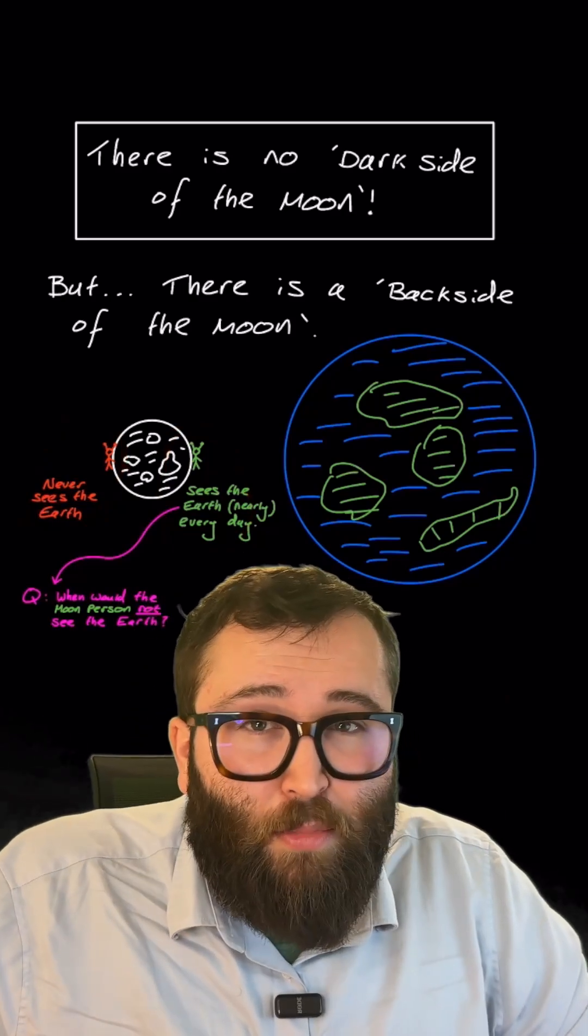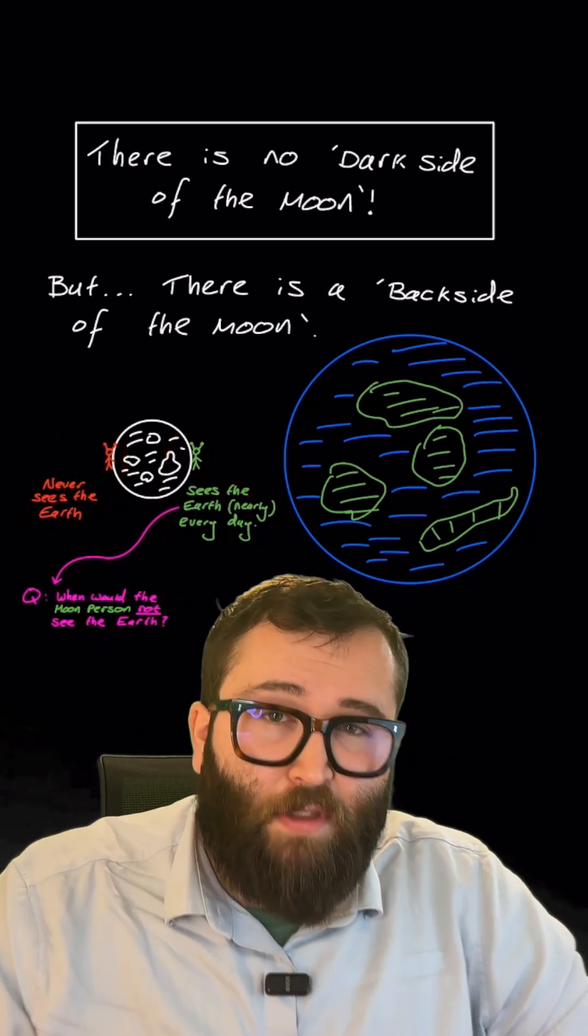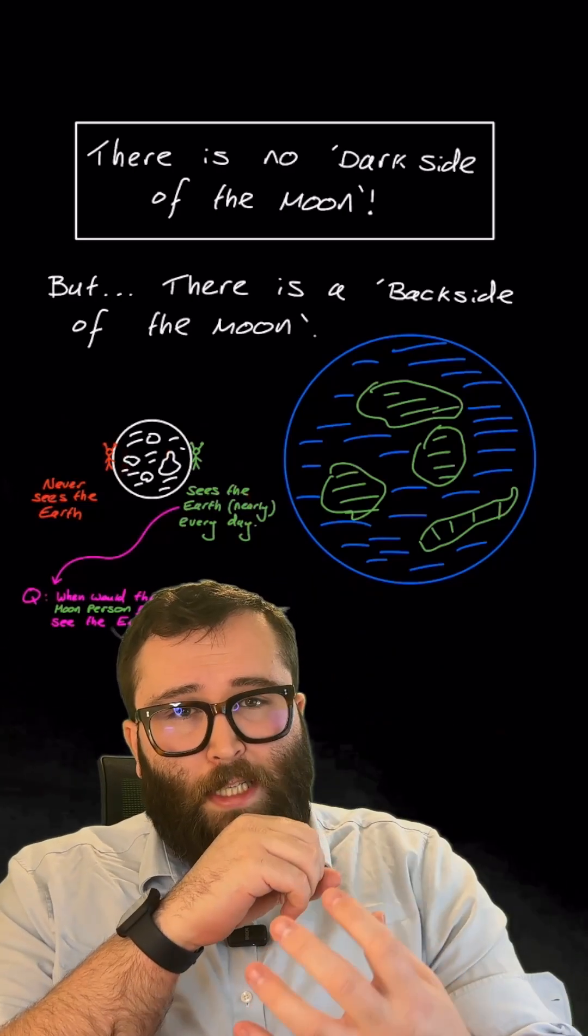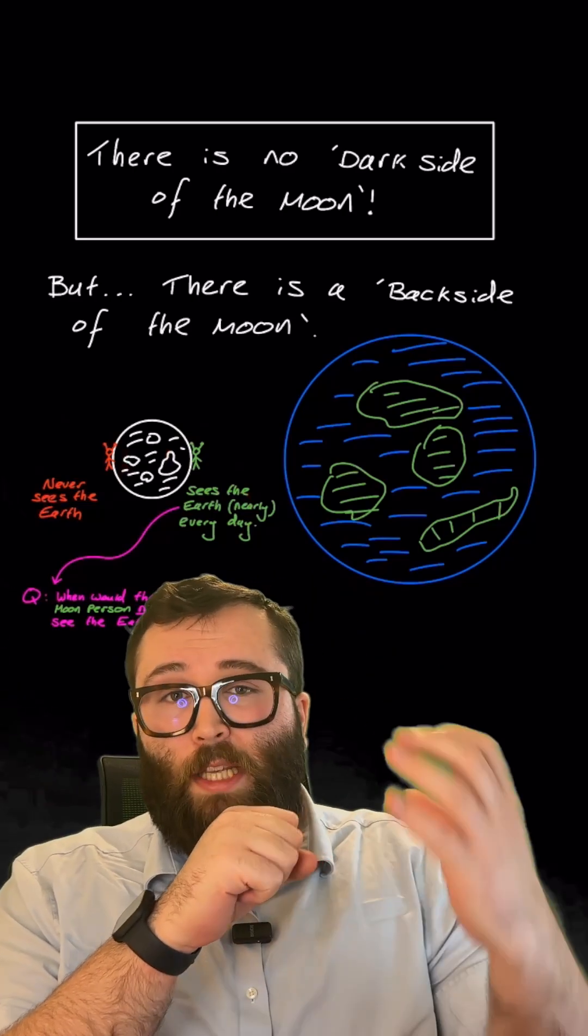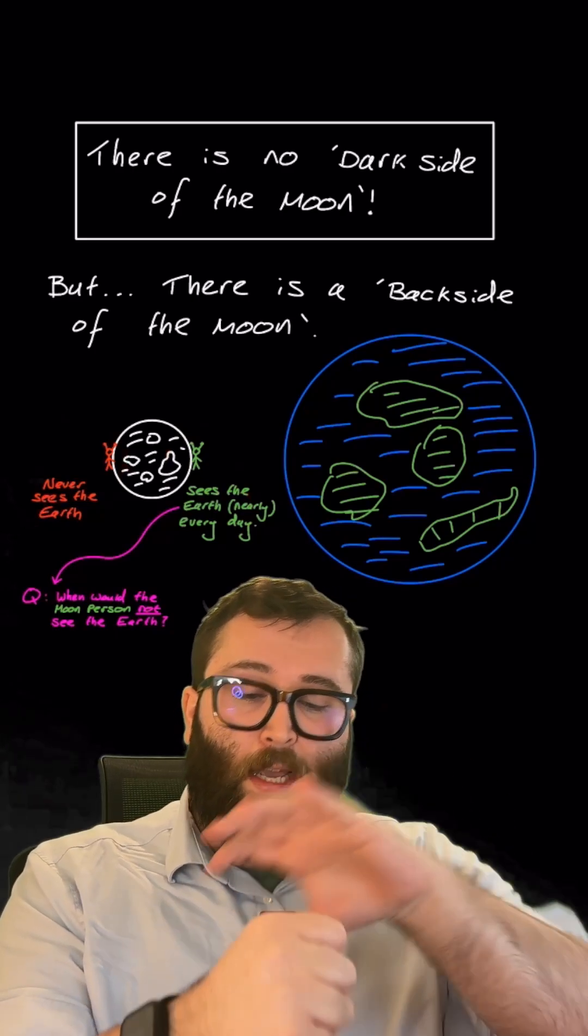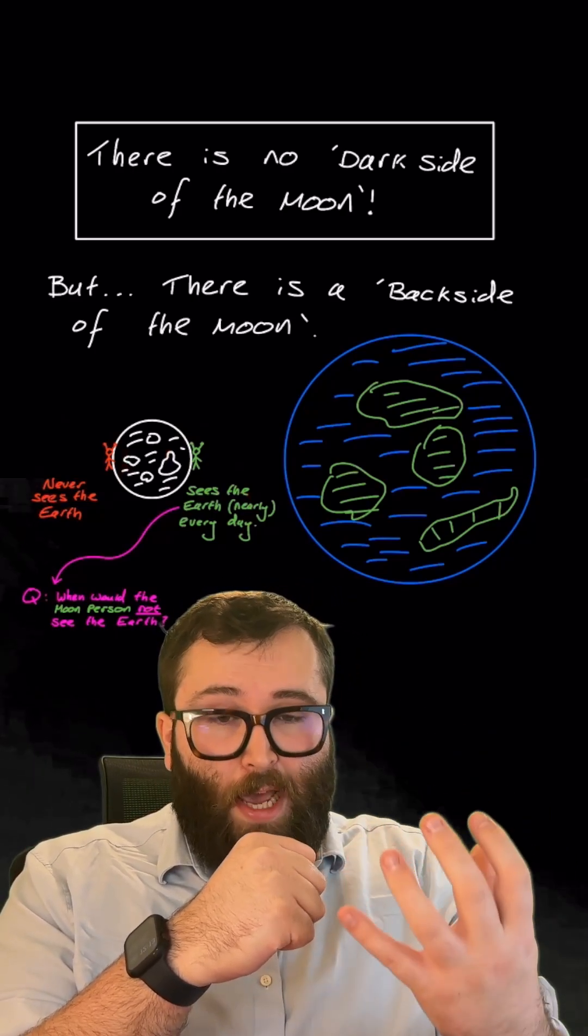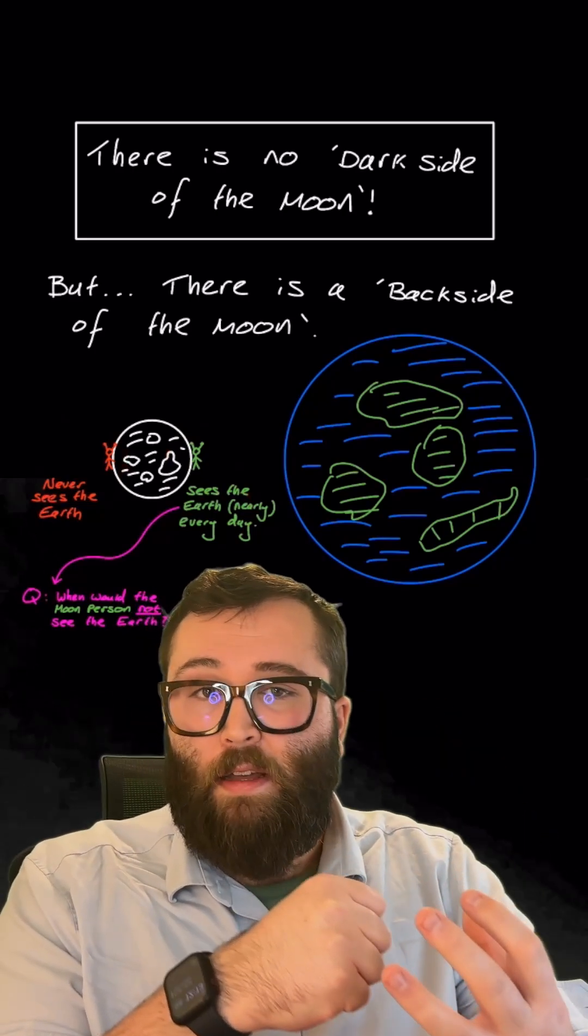Now although there's no dark side of the moon, there is however a back side of the moon. This is because the moon is what we call tidally locked as it orbits the earth. So the same side of the moon is always facing us as it orbits. As it goes around the earth, the rate at which it rotates on its own axis is the same as the rate at which it orbits the earth.